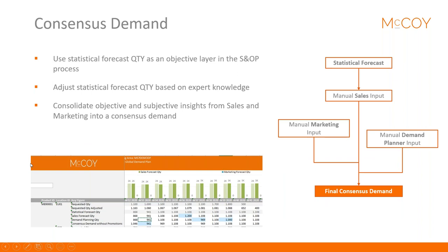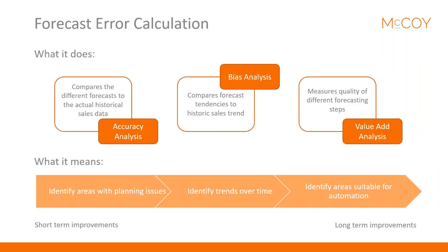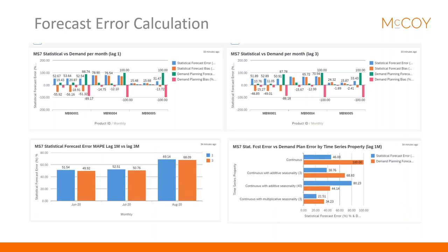Once all additional processes are done, you move to consensus demand. Starting with your statistical forecast, expert knowledge from marketing or sales adjusts it. You can then calculate the forecast error by comparing different forecasts against actual historical data, compare tendencies and trends, and use different measurements. You can create different forecast versions to compare — for example, the statistical forecast against the demand planning forecast — to see which is more accurate, since the statistical forecast isn't always better.